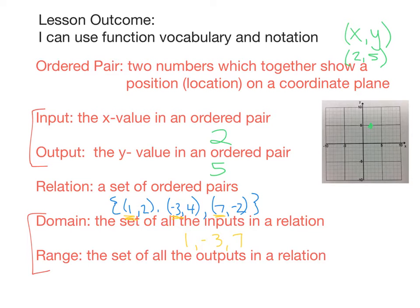Our range is that set of all the outputs, so we've got 2, 4, and negative 2. So our set of all outputs is 2, 4, and negative 2. We'll do a lot of practicing of determining the domain and range in a relation and in a function. More on that relationship later.